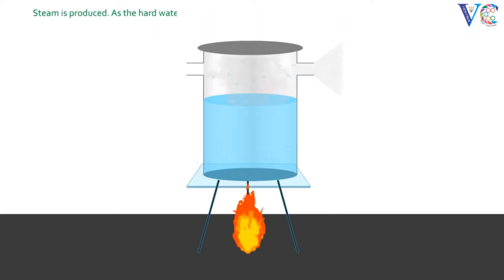As the hard water is used to produce steam, the steam may come out with water droplets. The production of wet steam is called priming.